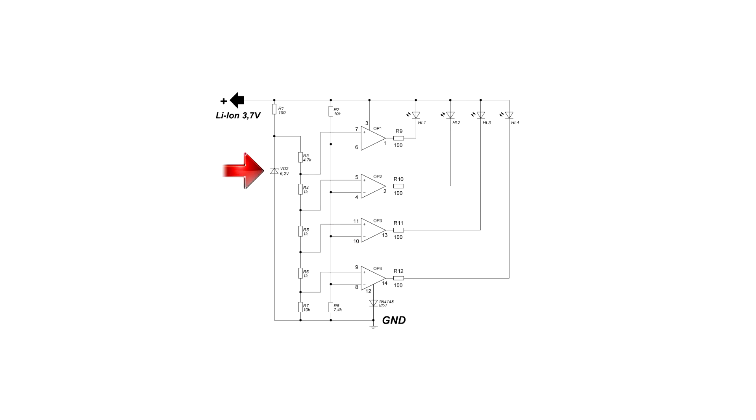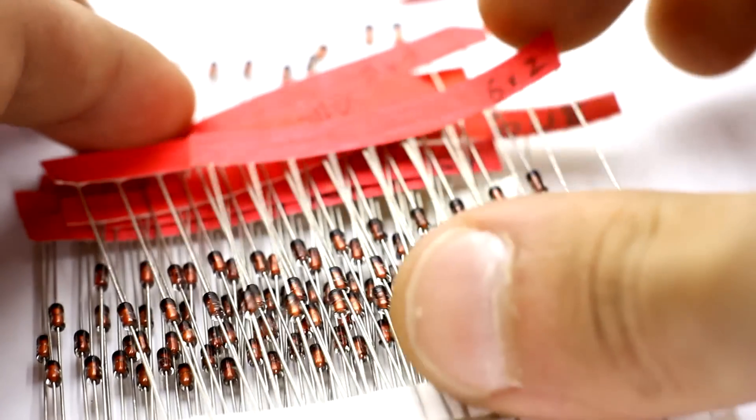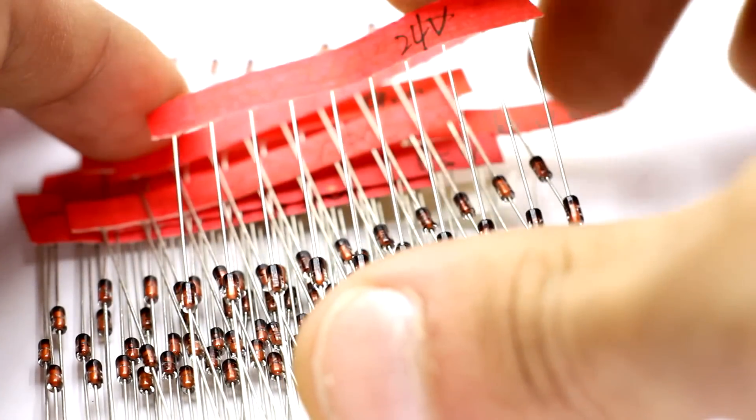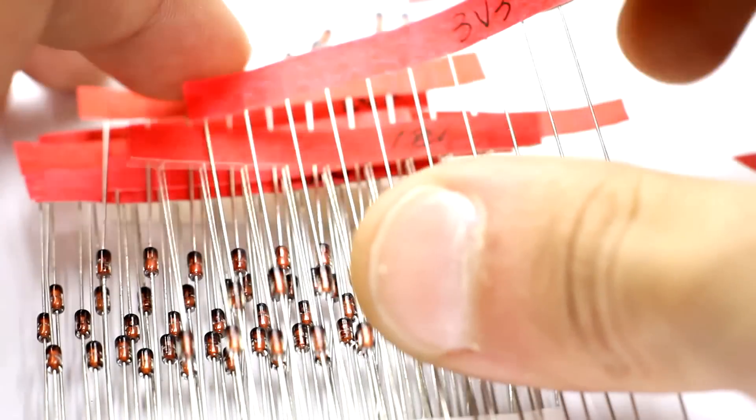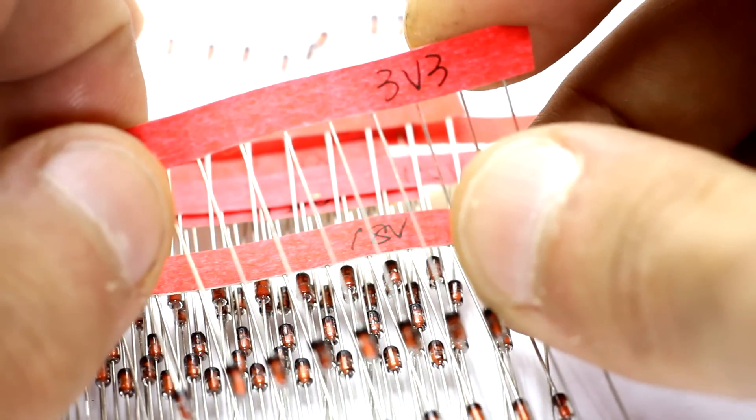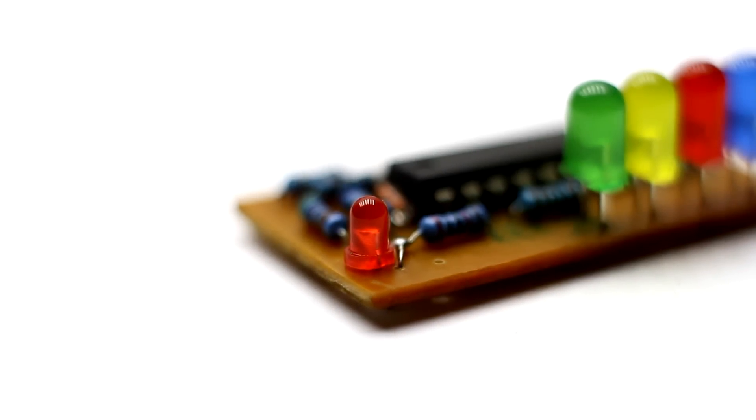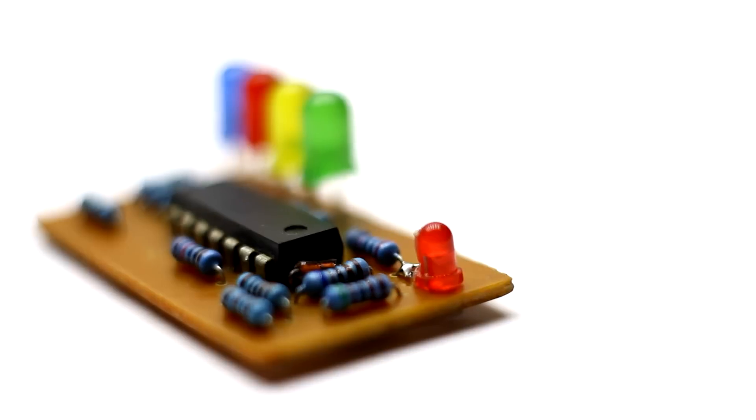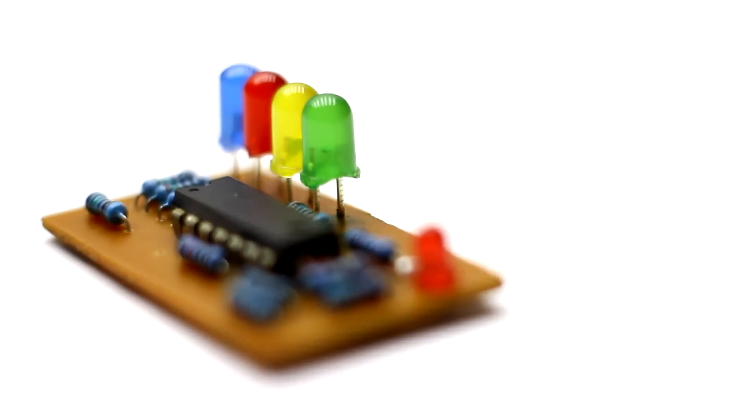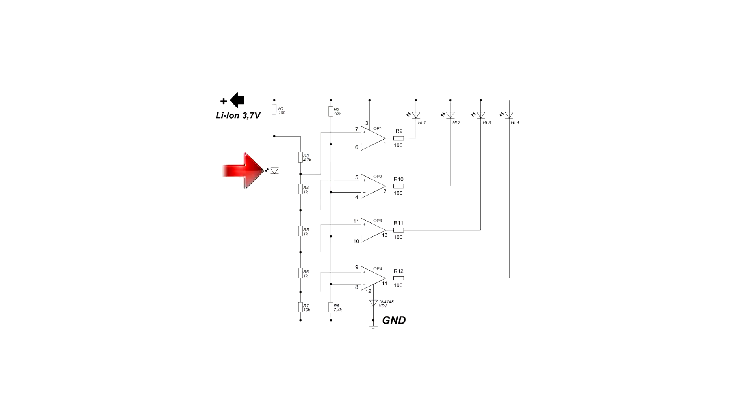Therefore it is necessary to find a zener diode for about 2.5 volts or less. Unfortunately in my reserves I found only zener diode at 3.3 volts. The solution is to use the LEDs as a reference voltage source. For red, yellow, and green LED, the minimum glow voltage is within 2 volts, which is what we need. The only difference is that the LED is connected in the forward direction, unlike the zener diode.